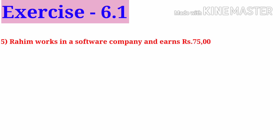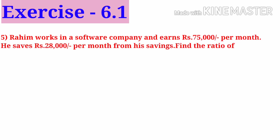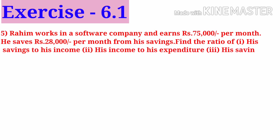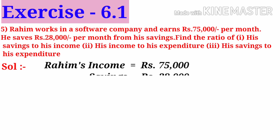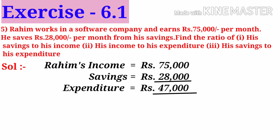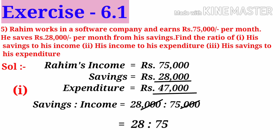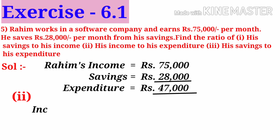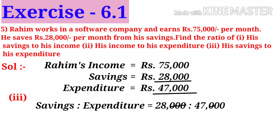Number 5: Rahim works in a software company and earns 75,000 rupees per month. He saves 28,000 rupees per month from his savings. Find the ratio of savings to income, income to expenditure, and savings to expenditure. Solution: Rahim's income is 75,000 rupees, savings is 28,000 rupees. On subtraction, expenditure is 47,000 rupees. Number 1: savings to income equals 28,000 to 75,000. Cancelling three zeros, the ratio is 28 to 75. Number 2: income to expenditure equals 75,000 to 47,000. Simplifying by 1000, we get 75 to 47. Number 3: savings to expenditure equals 28,000 to 47,000. Simplifying by 1000, the ratio is 28 to 47.